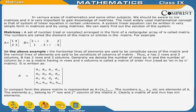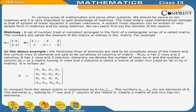A set of numbers, real or complex, arranged in the form of a rectangular array is called a matrix. The numbers are called the elements of the matrix or entries in the matrix.